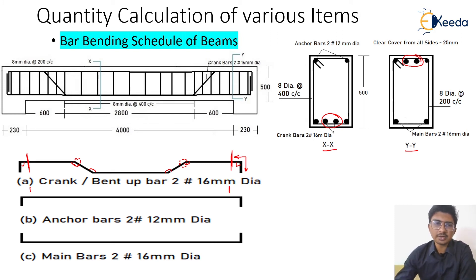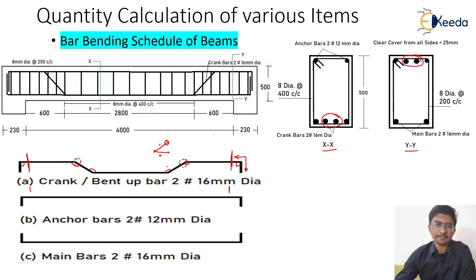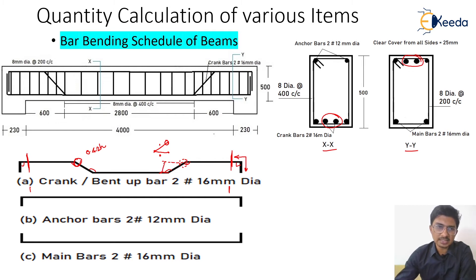The horizontal clear span alone is not sufficient because the 45-degree bend adds extra distance. If you connect the same two points vertically, that horizontal distance is less than the actual bar length along the bend. There is a certain extra distance that gets added, and that is what we need to calculate. The formula states that this extra distance due to the bend is 0.42h, where h is the center-to-center distance of the bar between its top and bottom positions.